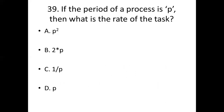Thirty-ninth bit. If the period of a process is P, then what is the rate of the task? Option A: P squared. Option B: 2 into P. Option C: 1 by P. Option D: P. Answer: Option C, 1 by P.